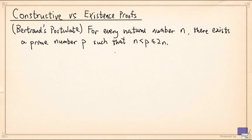So a constructive proof for this statement will show you how to find this p given a natural number n, whereas an existence proof will not tell you exactly how you can find such a p given a number n.